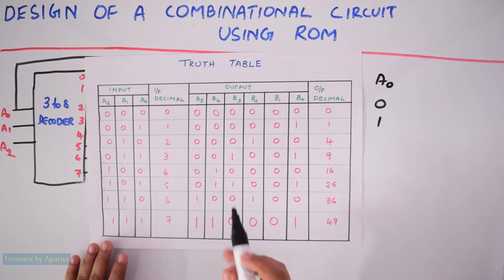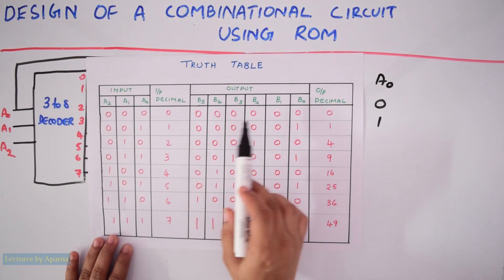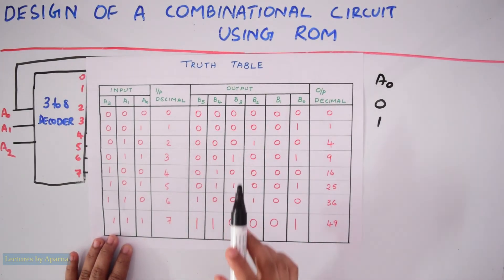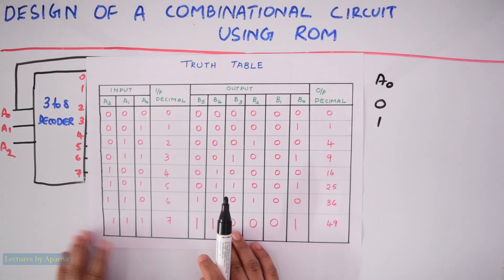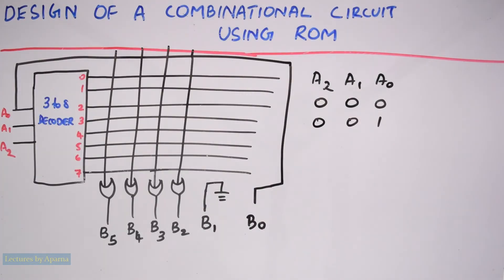So we need OR array only for the rest of the four outputs: B2, B3, B4, and B5. So we will draw the four OR gates.